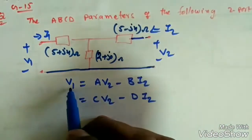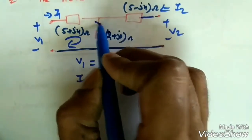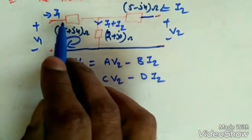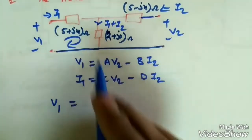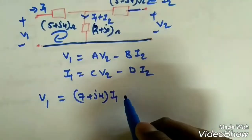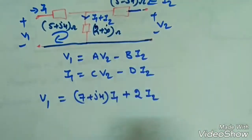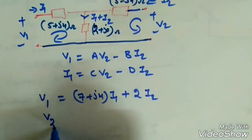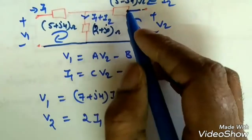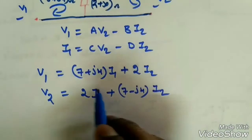Applying KVL in the first loop: both I1 and I2 flow here, so their sum appears. Applying KVL gives V1 = (5 + j4 + 2)I1 + 2I2 = (7 + j4)I1 + 2I2. For the second loop: V2 = 2I1 + (5 − j4 + 2)I2 = 2I1 + (7 − j4)I2.